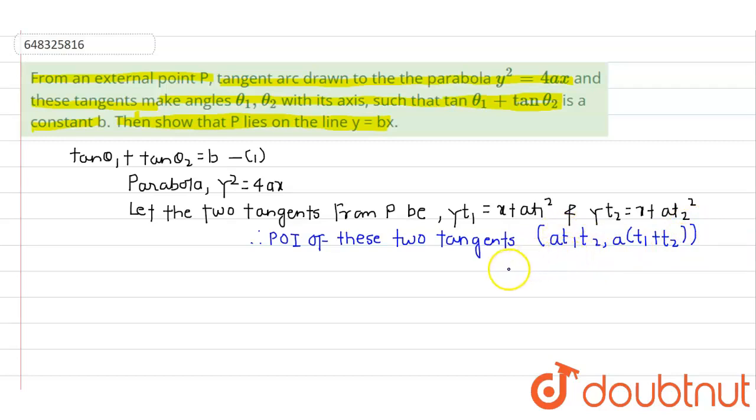Now what is given here? Let's call these as equation 2 and equation 3. From equation 2, the slope of the first tangent, since it is making angle θ₁, will be tan θ₁, which equals 1/t₁.